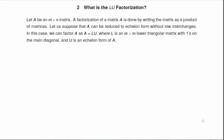What is the LU factorization? Well, let's let A be a general M by N matrix. A factorization is just writing it as the product of matrices. So for the LU, we'll suppose that A could be reduced to echelon form without row interchanges. In this case, we can write A equal to LU. L is an M by M lower triangular matrix with 1s on the main diagonal, and U is an echelon form of A.